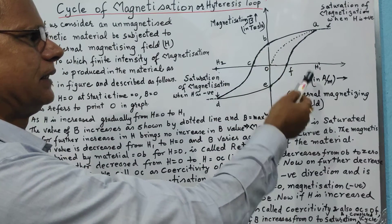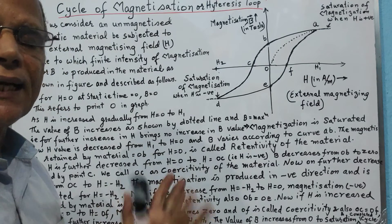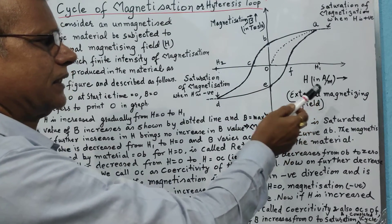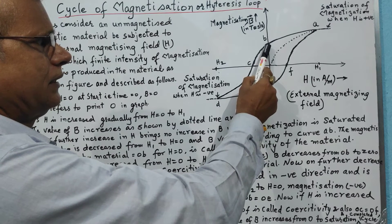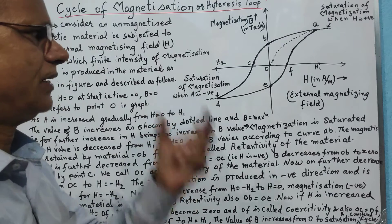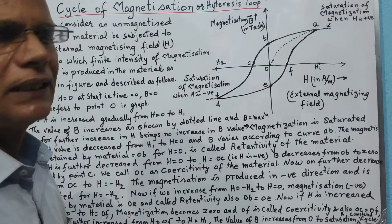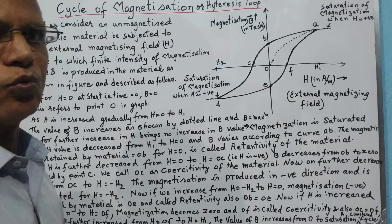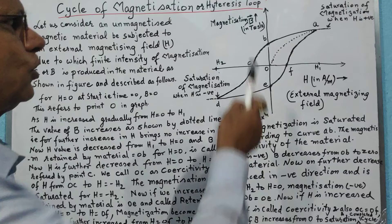We further decrease the external magnetizing field beyond zero — meaning it becomes negative, i.e., reversed in direction. As the H value decreases further, the intensity of magnetization decreases from point B to zero at point C, for a certain negative value of H. That value of H for which the intensity of magnetization becomes zero on the negative side is known as coercivity — the coercive force needed to eliminate the retained magnetization.